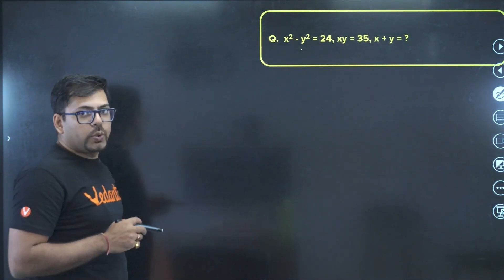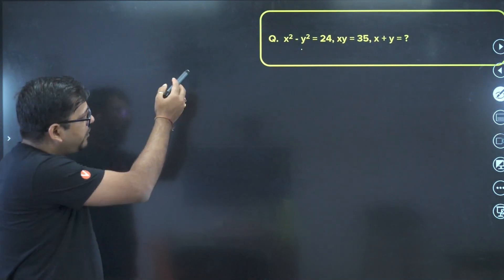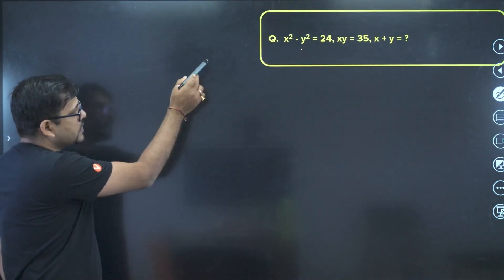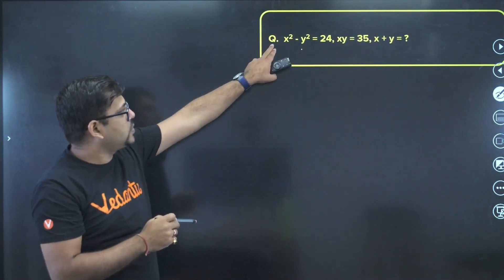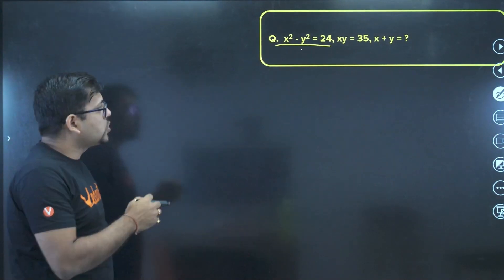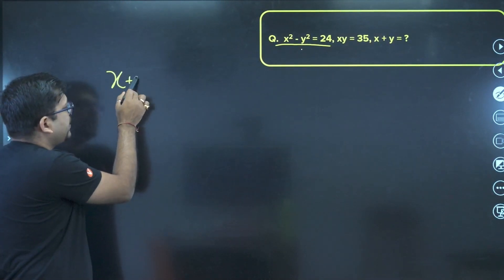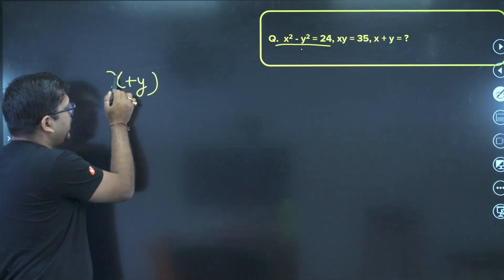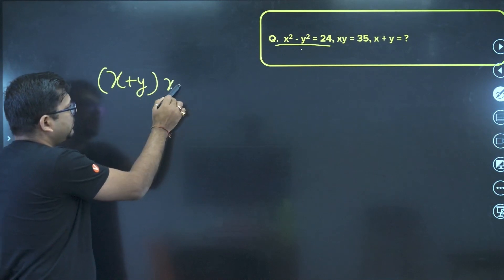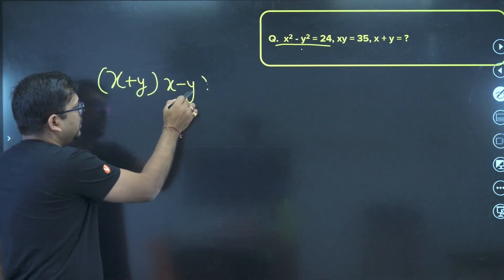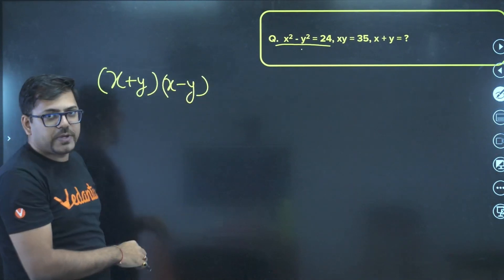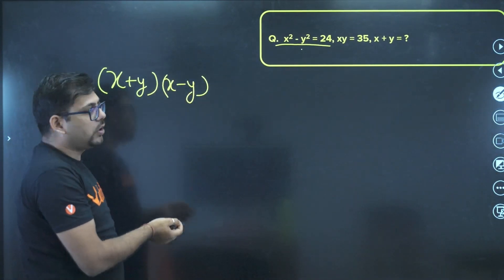What we can do: we are given x² minus y² equals 24. Let's factor it — I can write it as (x+y)(x−y), using the a²−b² formula we all know, equals 24.